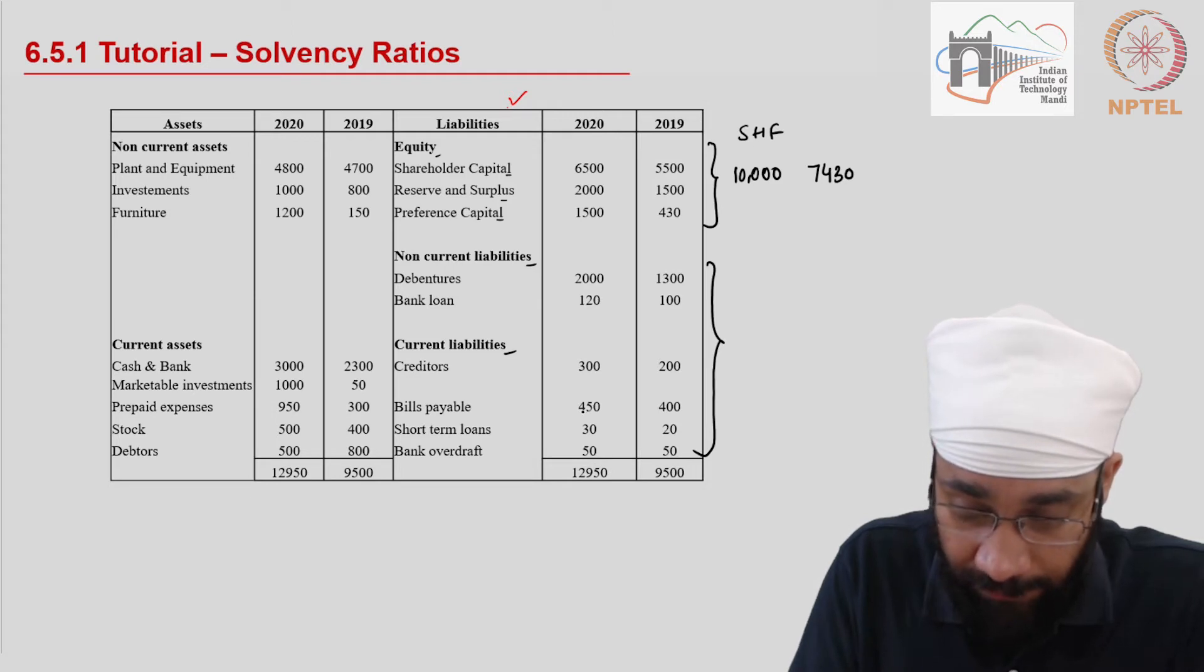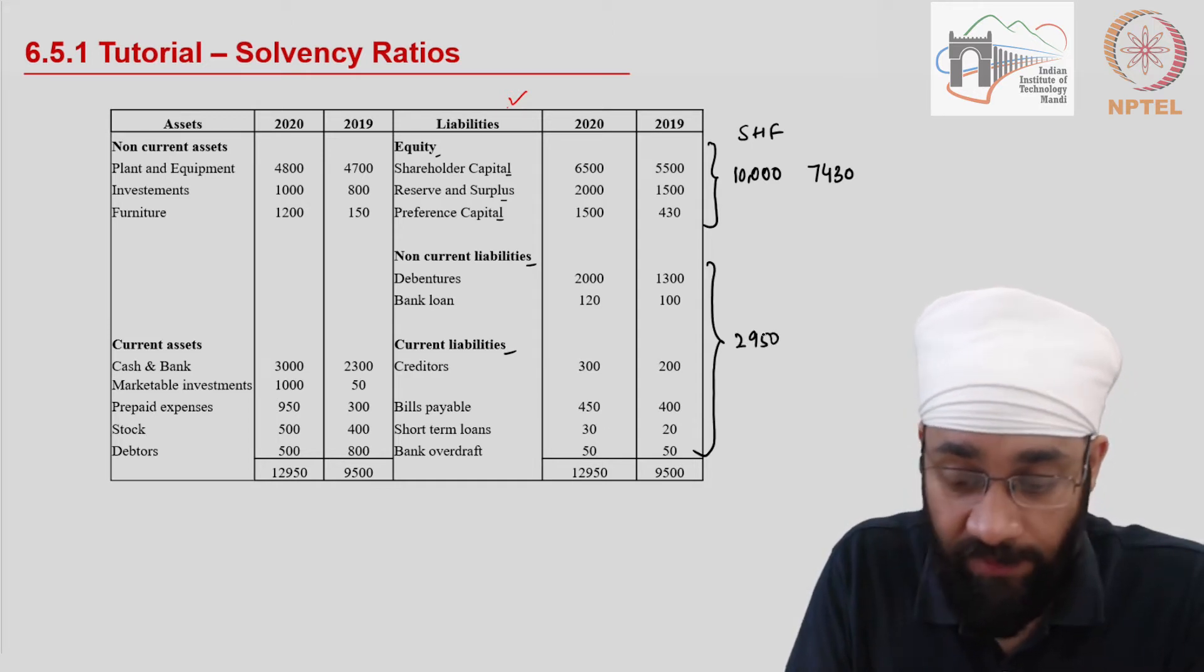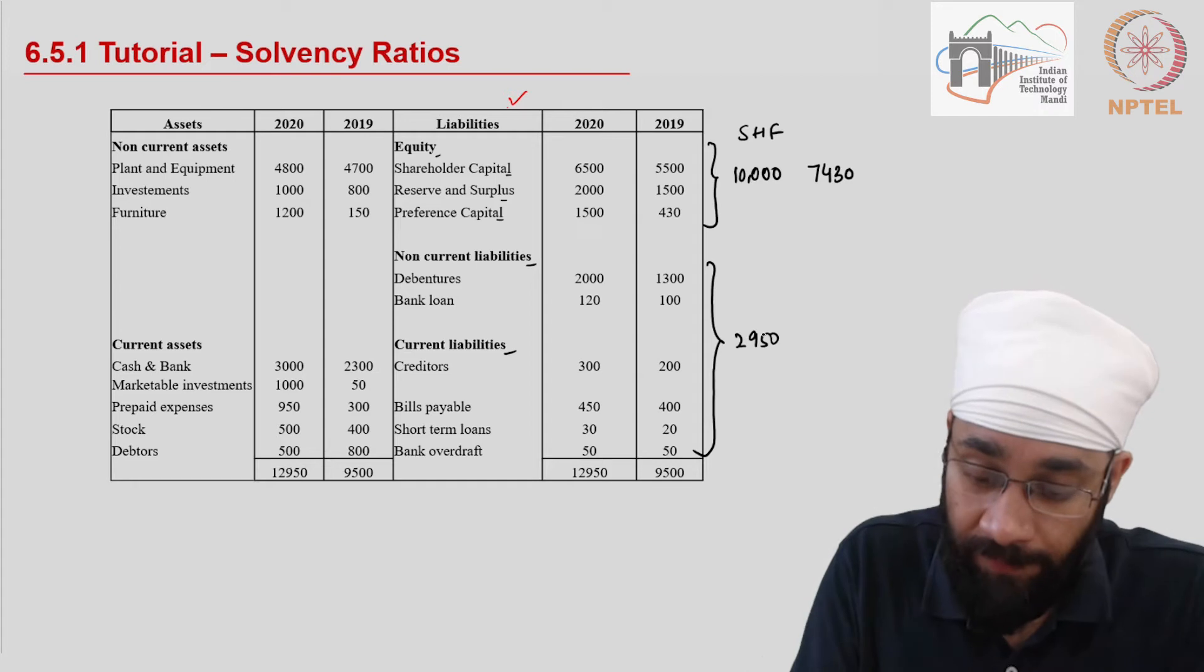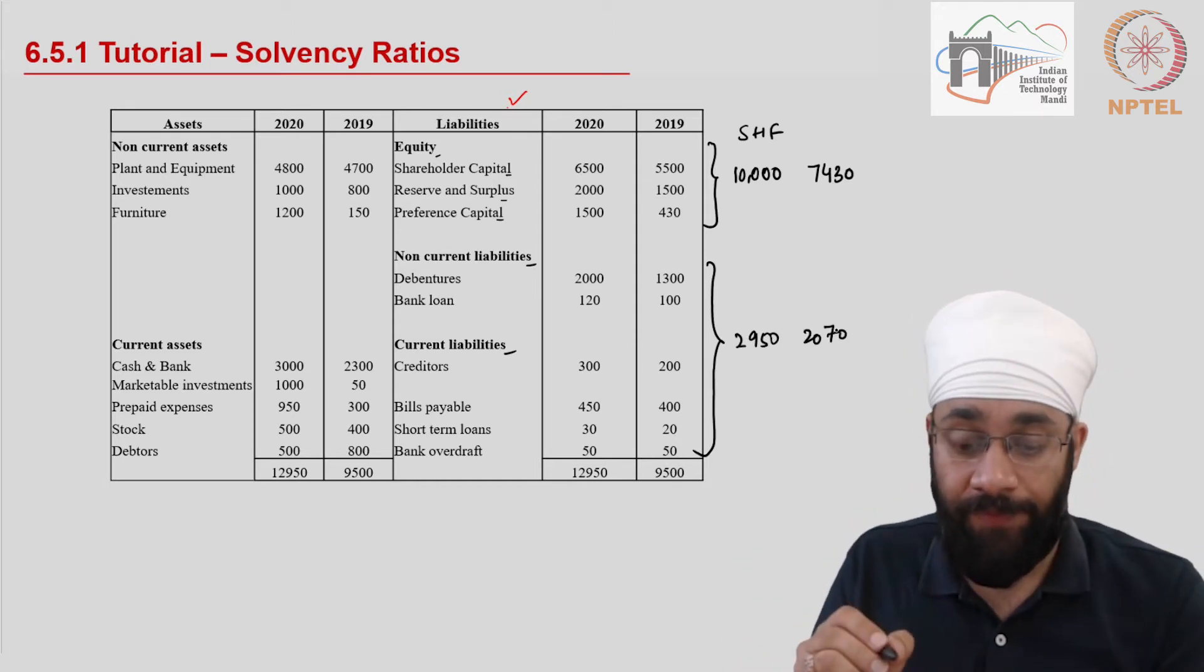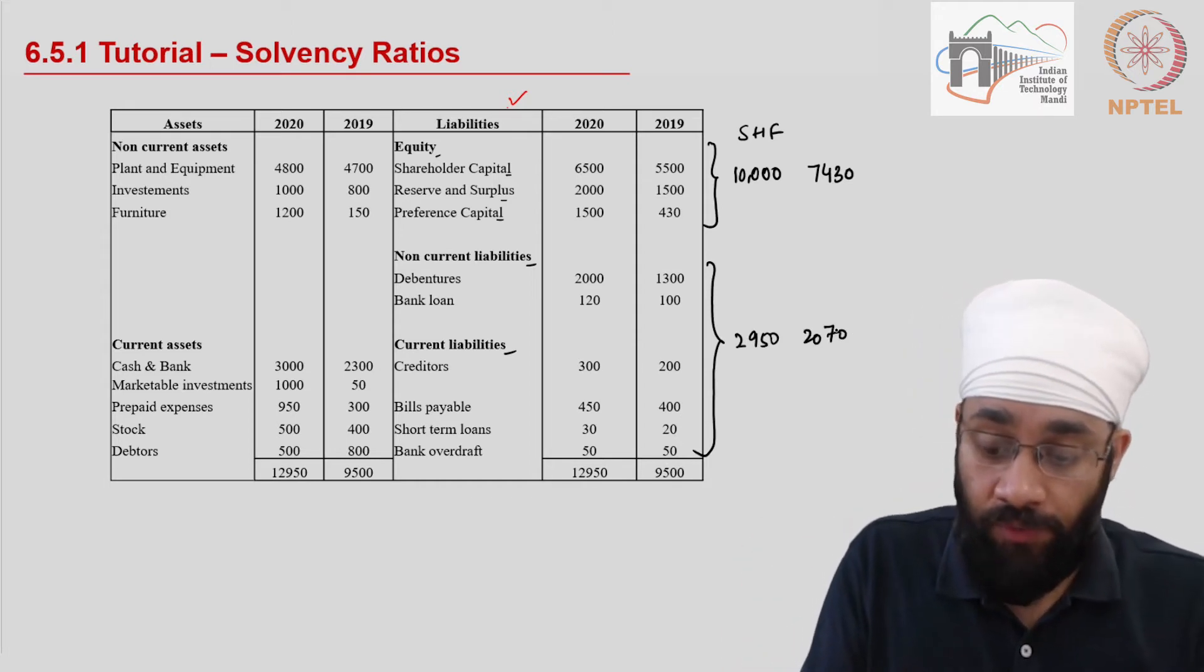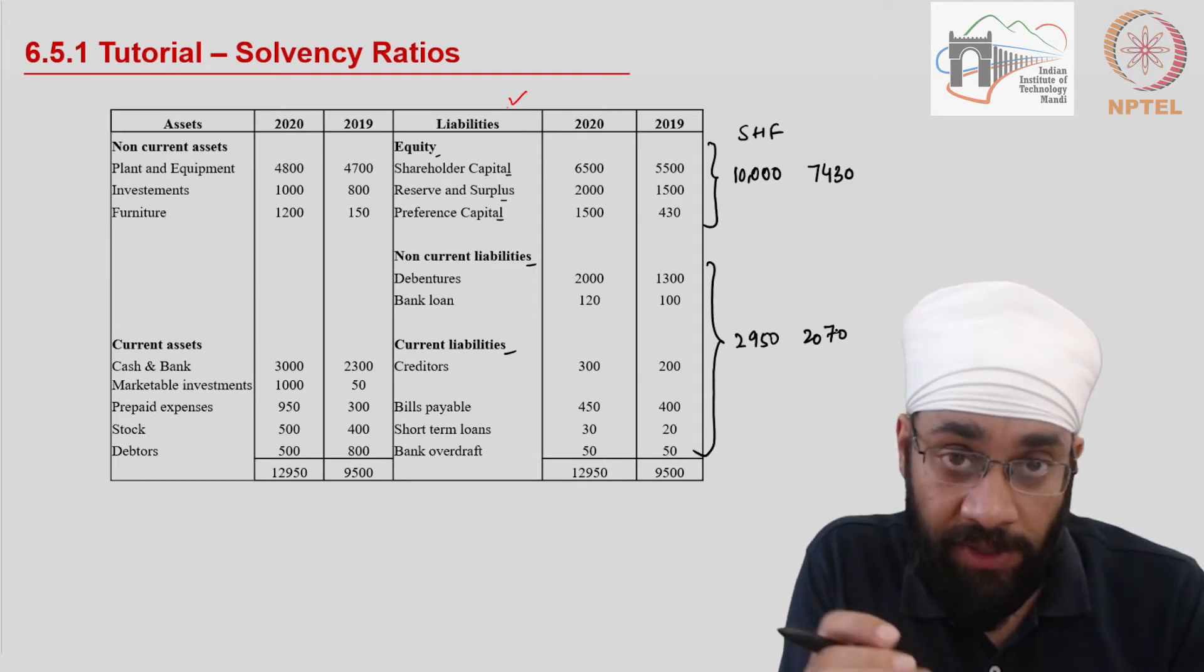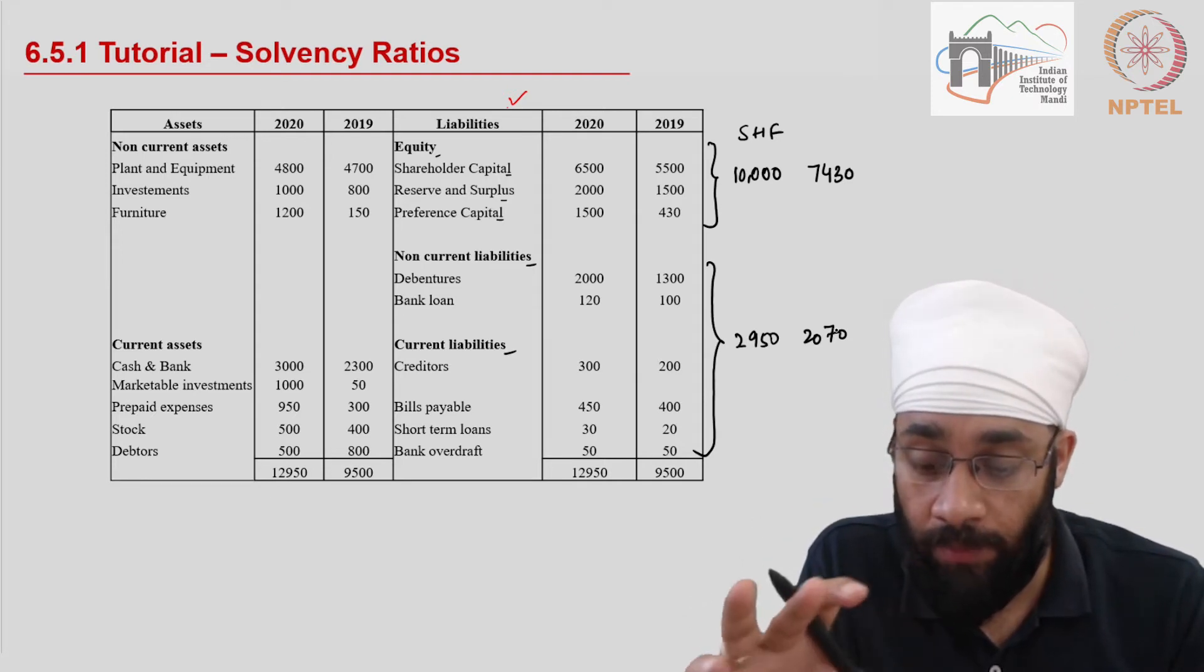Now this comes out to be 2950 for 2020, and for 2019 this will come out to be 2070. So we have the external liabilities and internal liabilities for both the years.